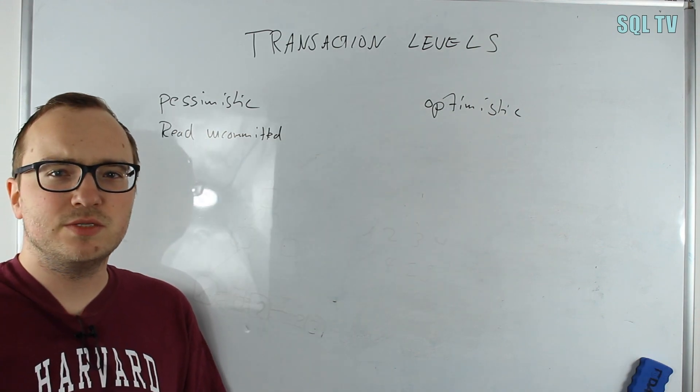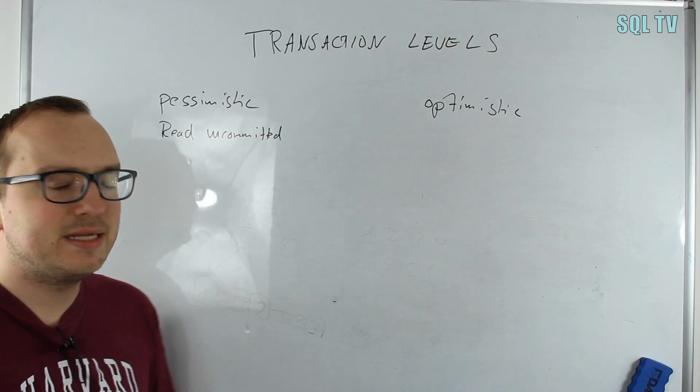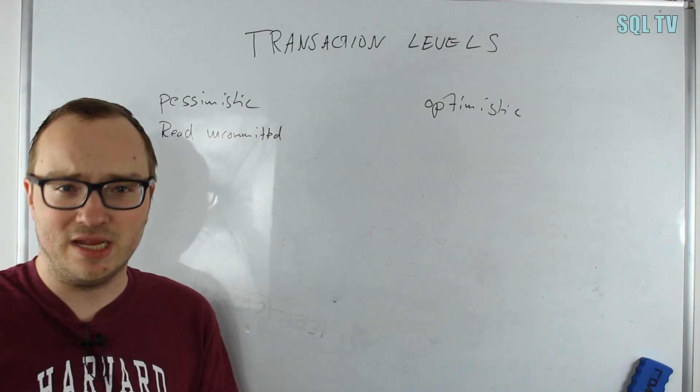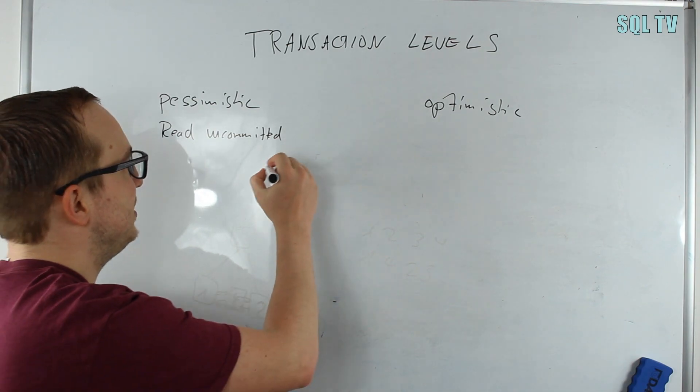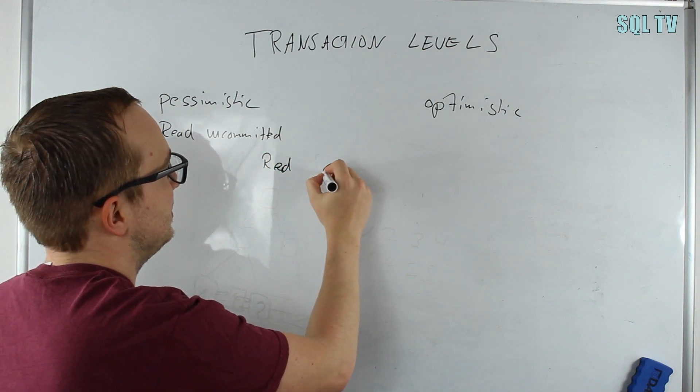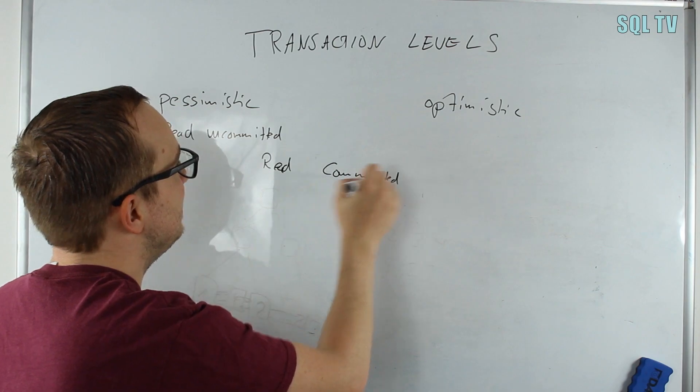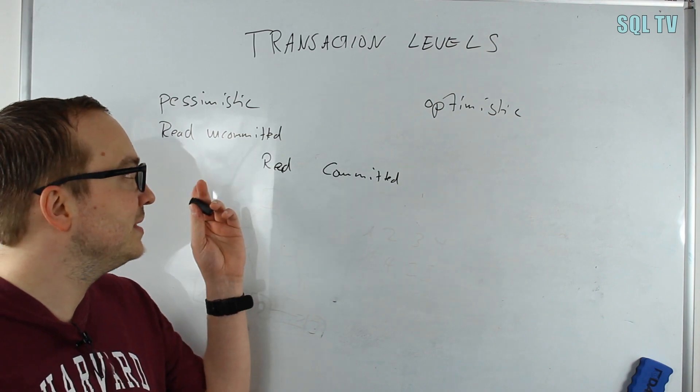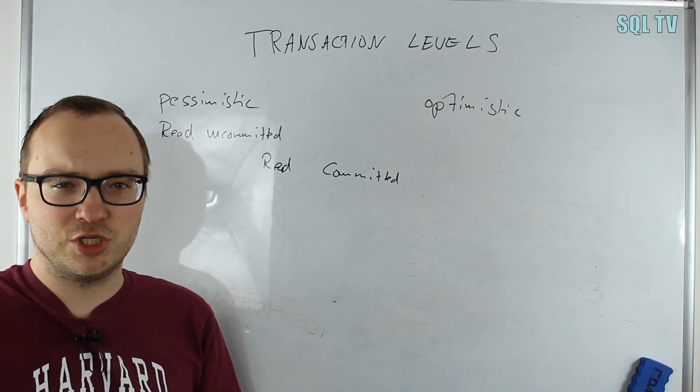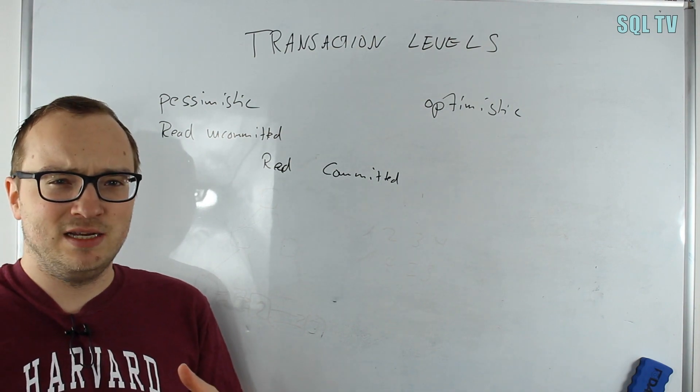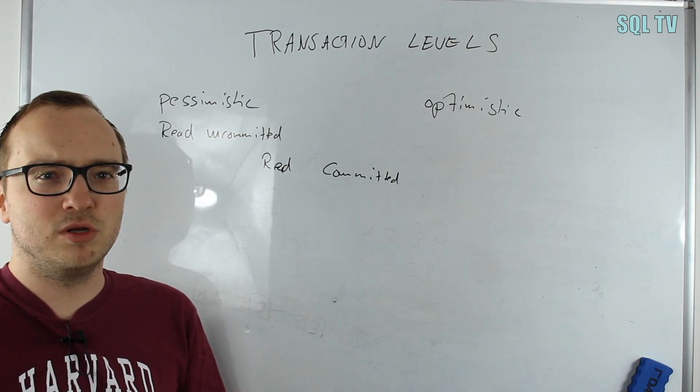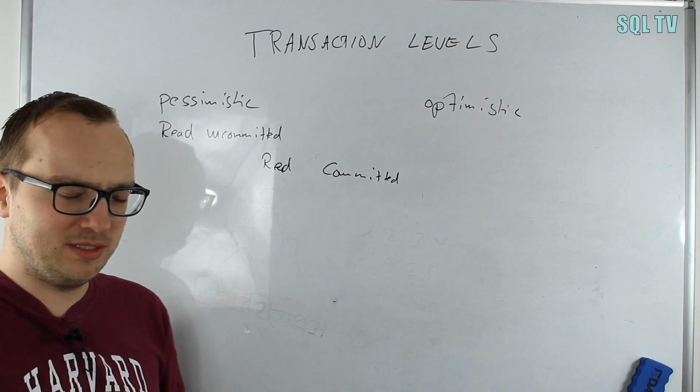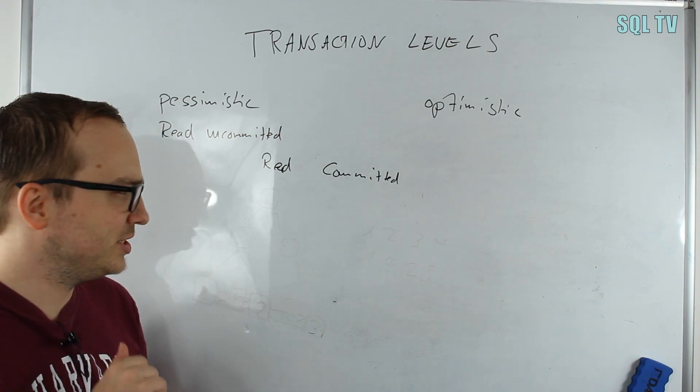The next one is the most common: read committed. This is the standard and default transaction level if you don't set anything else. The tricky part is that read committed can be in both categories—it depends on if you mean pessimistic read committed or optimistic read committed. Let's start with pessimistic read committed, which is the default in SQL Server. It says we allow basically everything but we don't want to read uncommitted data. If we read data, we don't want to read data from another transaction that changed it but did not commit the whole transaction yet.